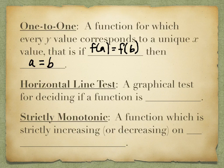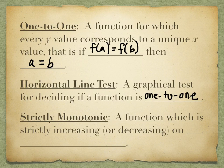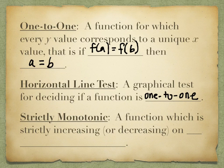We did talk about the horizontal line test — in a sort of hand-waving way. This is a graphical test that decides if a function is one-to-one. We talked about one graph you're very familiar with that fails this test: the graph of x squared, a parabola. Almost every line I would draw would cross the graph twice. And if it were one-to-one, it would only cross the graph in at most one place at a time.